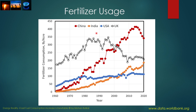In terms of fertilizer usage, if you contrast the United Kingdom — where the amount of fertilizer used has remained relatively constant — with the USA, where the amount of fertilizer used per acre increased from 1960 to 1980 but then remained fairly constant after that point — and look at China, where fertilizer usage continues to increase to raise farm yield, and also India, where fertilizer use continues to increase — the contrast is very clear.